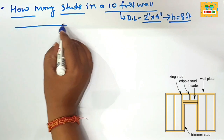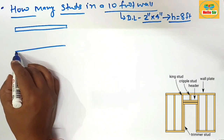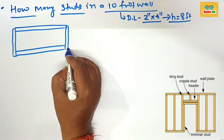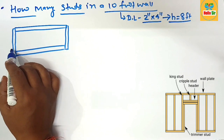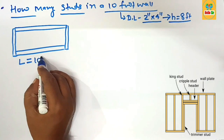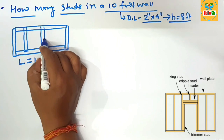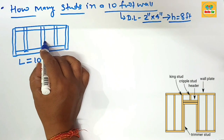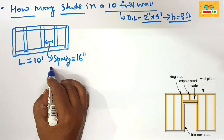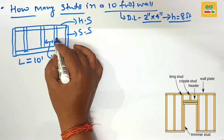First, we make a rough diagram to understand stud framing in a wall. The top layer is the top stud, the bottom layer is the bottom stud, and the side layer is the side stud — meaning one stud is used at the top, one at the bottom, and one stud at each end of the wall. The total length of the wall is 10 feet. Vertical studs connect the top and bottom, with a spacing of 16 inches on center.